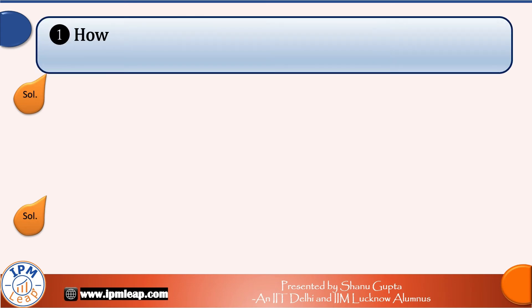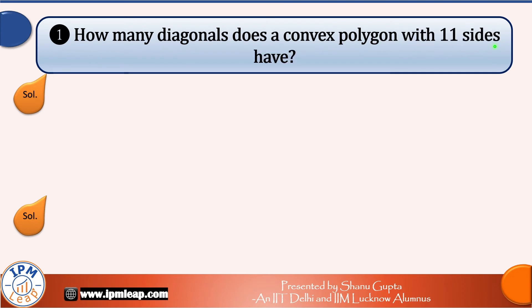Finally, let's practice two questions on this concept. The first is, how many diagonals does a convex polygon with 11 sides have? So n is equal to 11 here. Number of diagonals is equal to n into n-3 divided by 2.